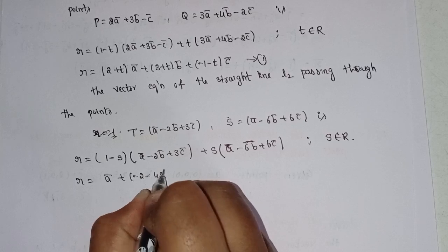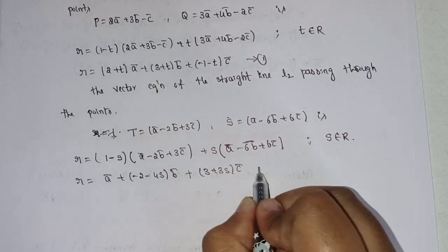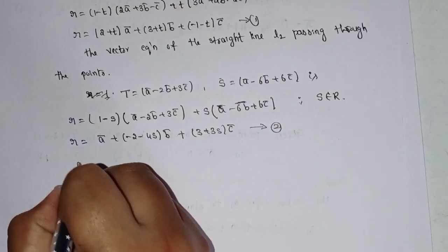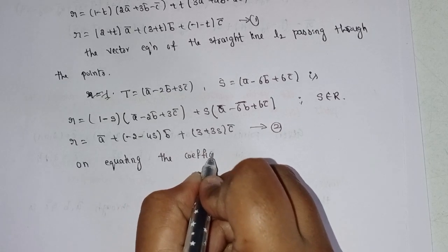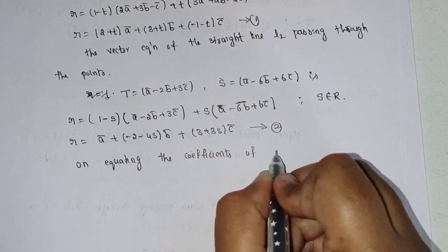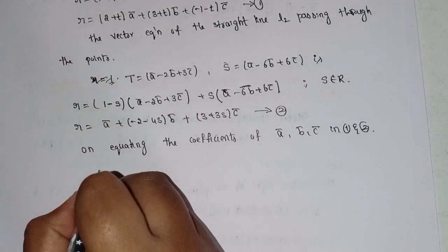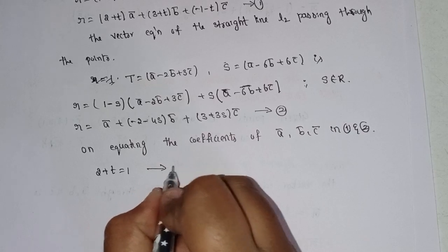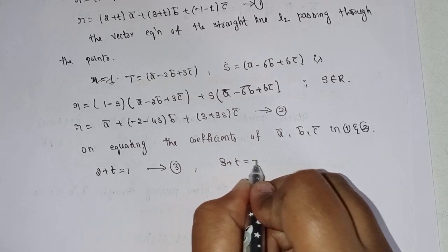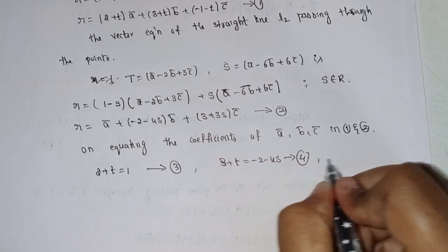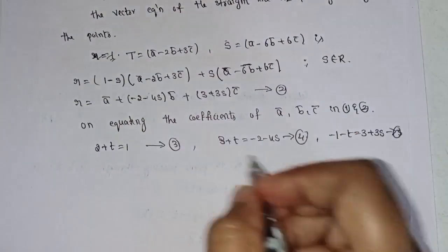Simplifying, r equal to a plus (minus 2 minus 4s)b plus (3 plus 3s)c. This is equation number 2. On equating the coefficients of a, b, c in equations 1 and 2: